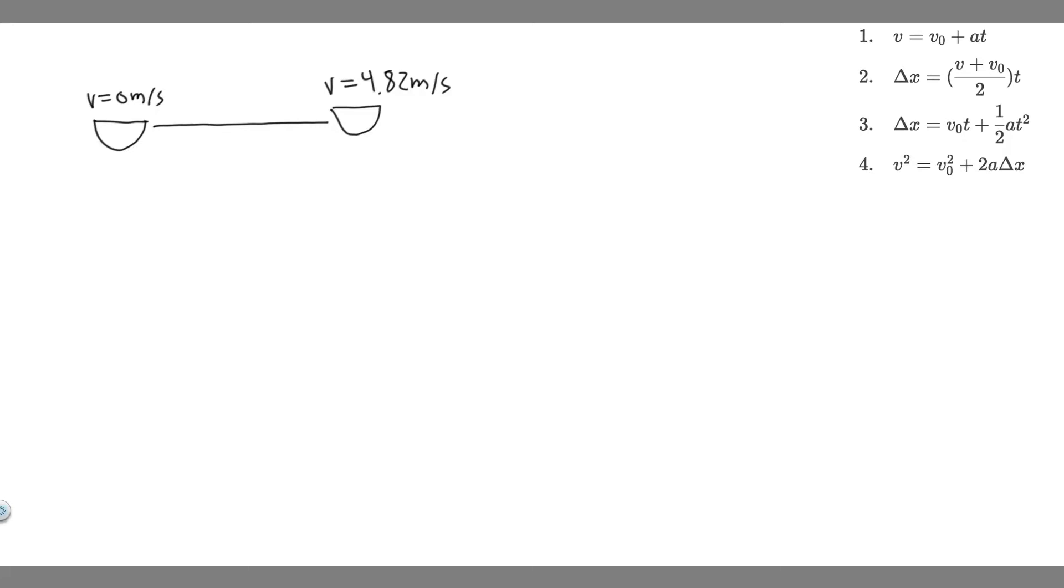In this problem, we're told, starting from rest, a boat increases its speed to 4.82 meters per second with constant acceleration. Part A, what is the boat's average speed? And Part B, if it takes the boat 4.77 seconds to reach this speed, how far has it traveled?